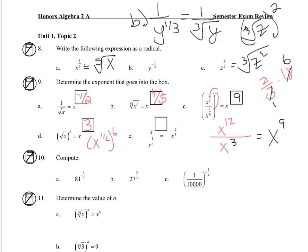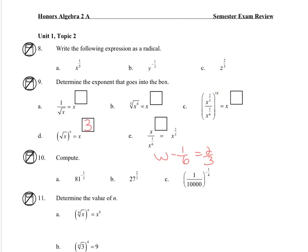So now for e, we need to think what value minus 1 sixth will give us 2 thirds. So I can add the 1 sixth to this side. So we need a common denominator, that is 4 sixth plus 1 sixth, which gives us 5 sixth.